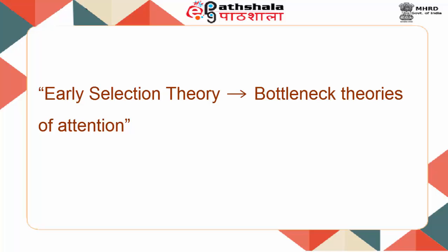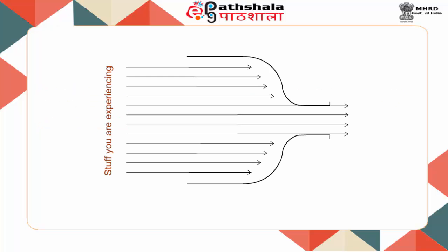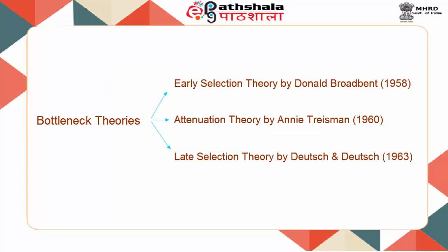The early selection theory, also known as the filter theory, was postulated by Broadbent in 1958 and is one of the bottleneck theories of attention. Have a look at this bottle — the narrow neck allows only a limited amount of any substance to pass through, and this is what the bottleneck theories of attention postulate: that we cannot consciously attend to all of our sensory input at the same time. Each of the bottleneck theories — namely early selection theory, attenuation theory, and the late selection theory — attempt to explain how the material that passes through the bottleneck is selected.